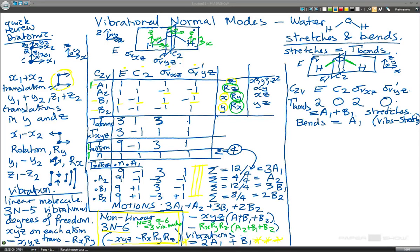So I'll just make that clear. If we have vibrations of 2A1 plus B1 down here, and we're going to take away the stretches, which are A1 plus B1, we are left with just A1 as a bend left over. Okay? I hope that's clear. So now we've got to the point now where we know what our vibrational normal modes are.